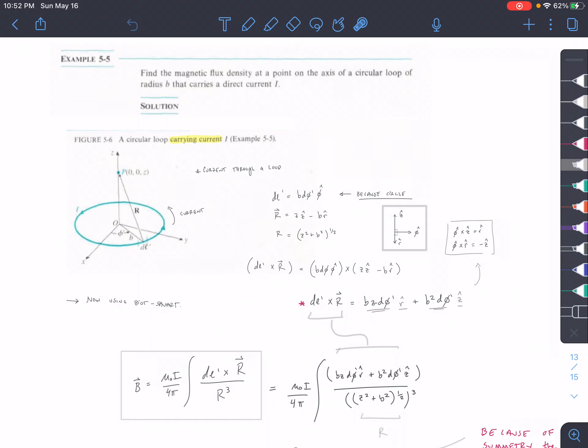Okay, so our R vector is always going from the current in the ring to the point. So we're going in and then up. So negative B in the R-hat direction, and then Z in the Z-hat direction. So from any point on the ring, we want to get to the point that we're measuring at, so we just have to go in and up.